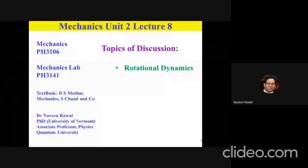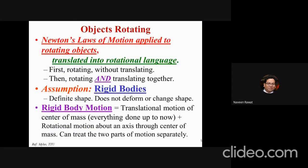Today we will review the concepts of rotational motion so that from next week onwards we can deal with torque and moment of inertia. We have been looking at objects doing translational motion and at objects interacting through collision. Now we want to see what happens when these objects are rotating. First we will look at just the object rotating without any translation, and then we will try to look at both rotational and translational motion together.